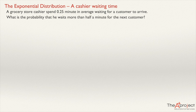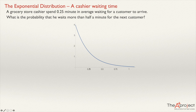What is the probability that he waits more than half a minute for the next customer? If we draw the probability density function of the exponential distribution, it will look like this. The mean will be somewhere here — they told us the mean is 0.25 minutes — and after the mean, there will be a lot of possible values with a very long range, because there is no limit.